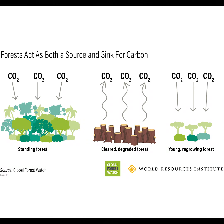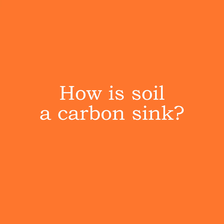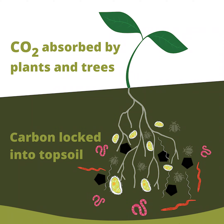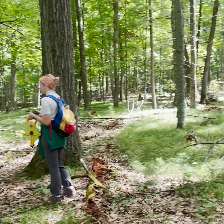A carbon sink is basically where carbon can be stored for longer term amounts of time. The ocean is a good sink — it's just taking carbon out of the atmosphere or out of trees and storing it. The ocean is one of the largest carbon sinks. And if you have good structure in soil, it makes it so that the carbon will stay in the soil for longer.